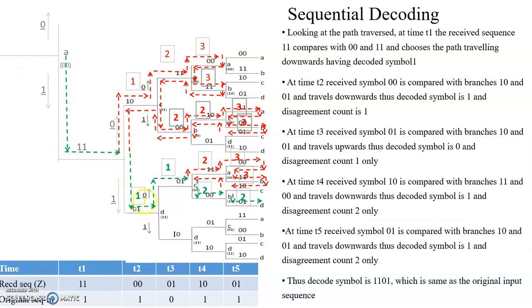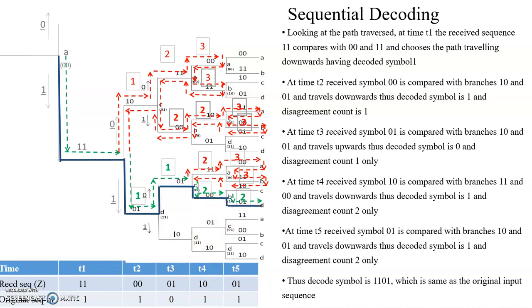The green color line is the path we have traced — this is our receive path. Now we find the original sequence. We concentrate on the green color path. Moving in the downward direction means input is 1. The green path moves downward again, so 1. Then the green path moves upward, so 0. Then downward, so 1. And again 1. So the original sequence is 1,1,0,1,1, which is the output of the receiver — the same as the input. This is the decoded signal we have obtained.